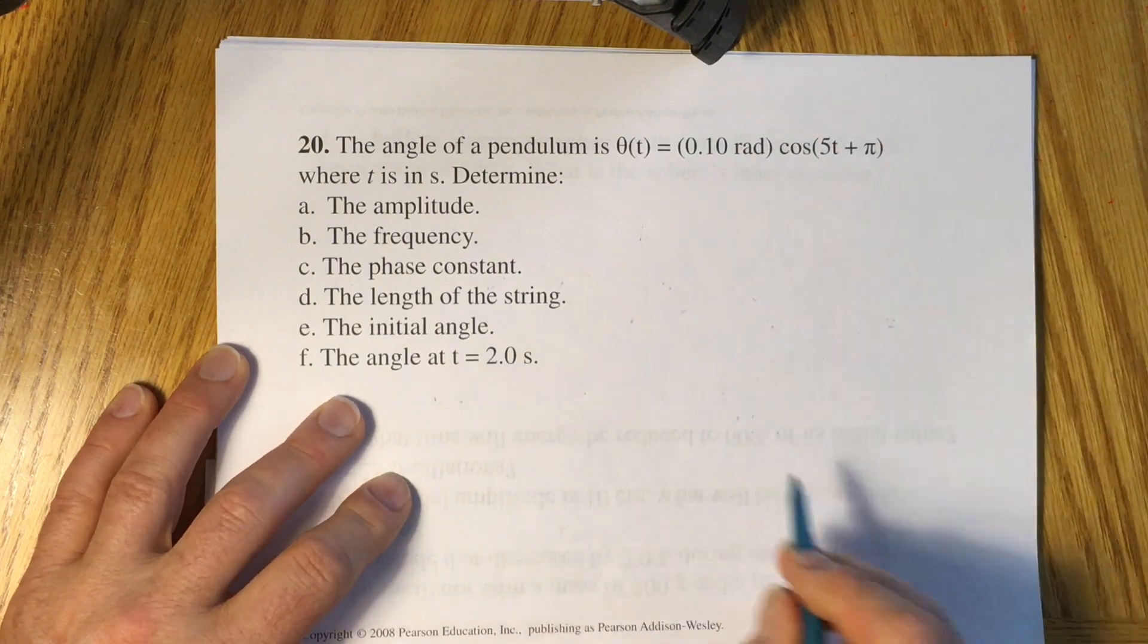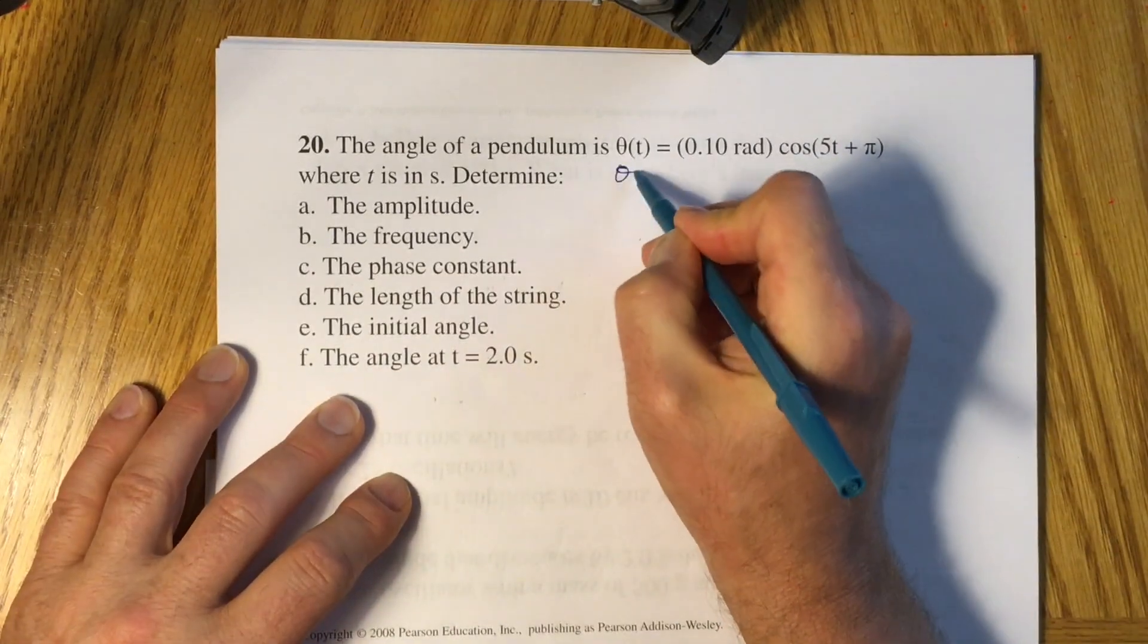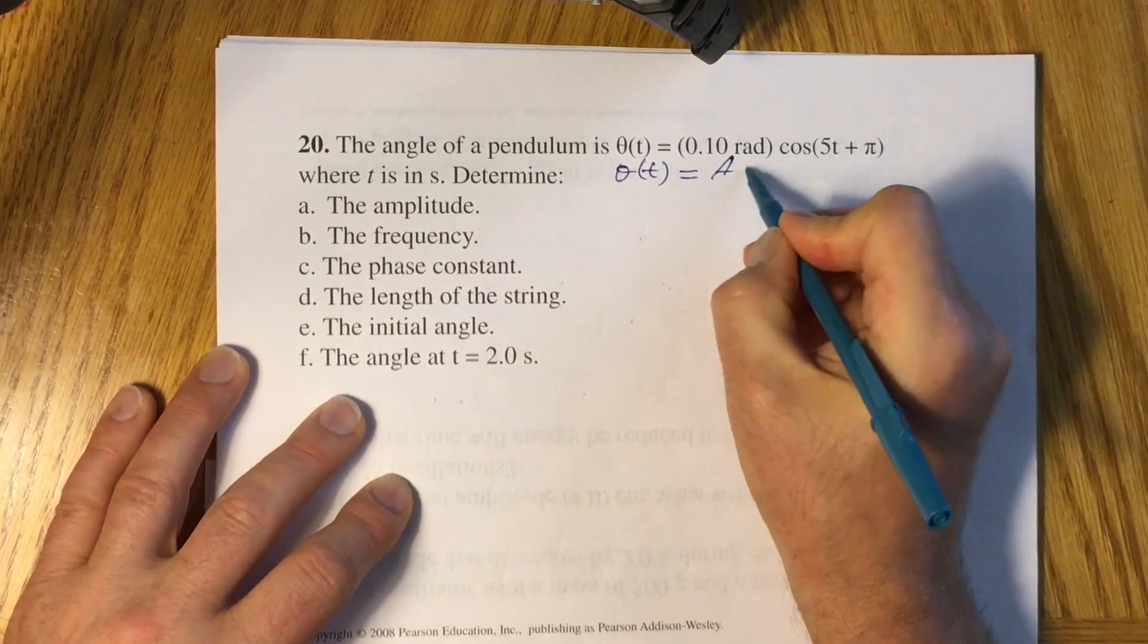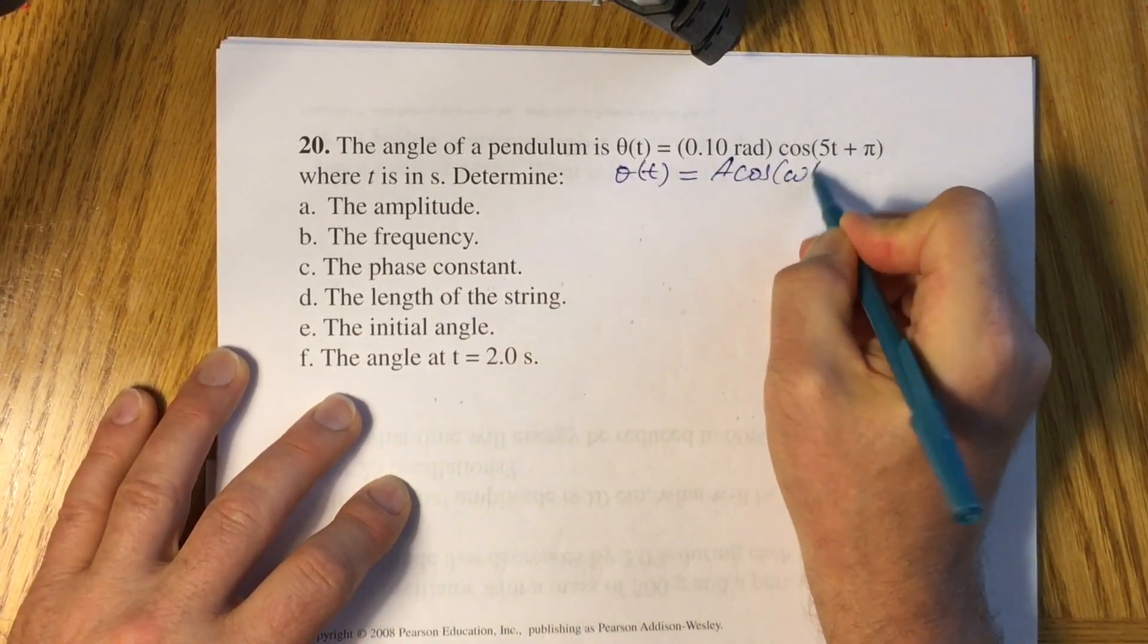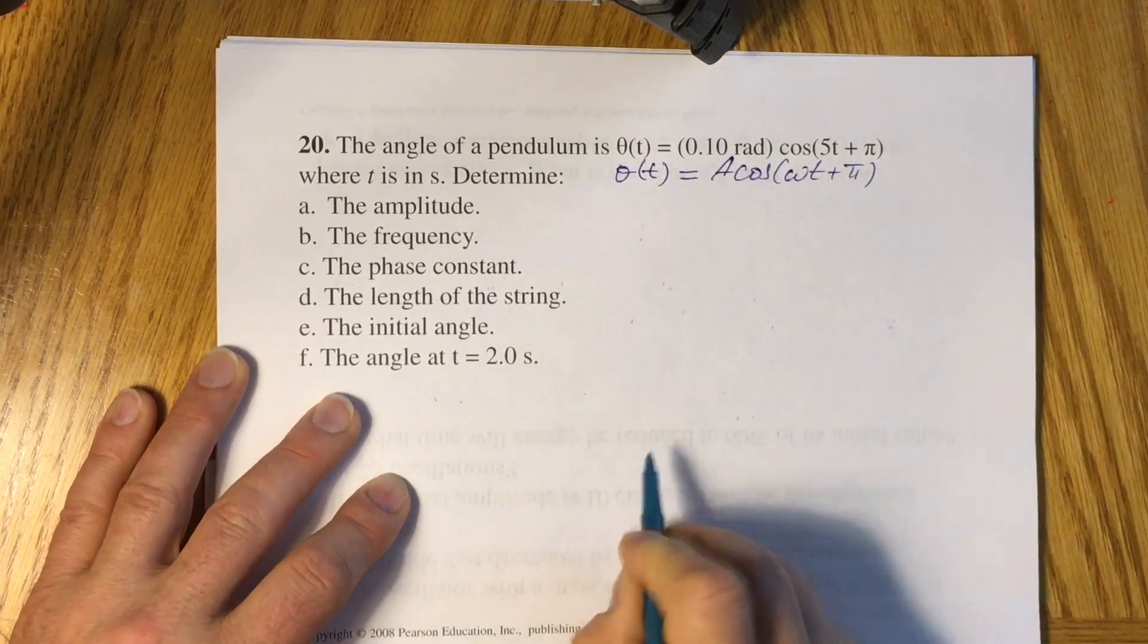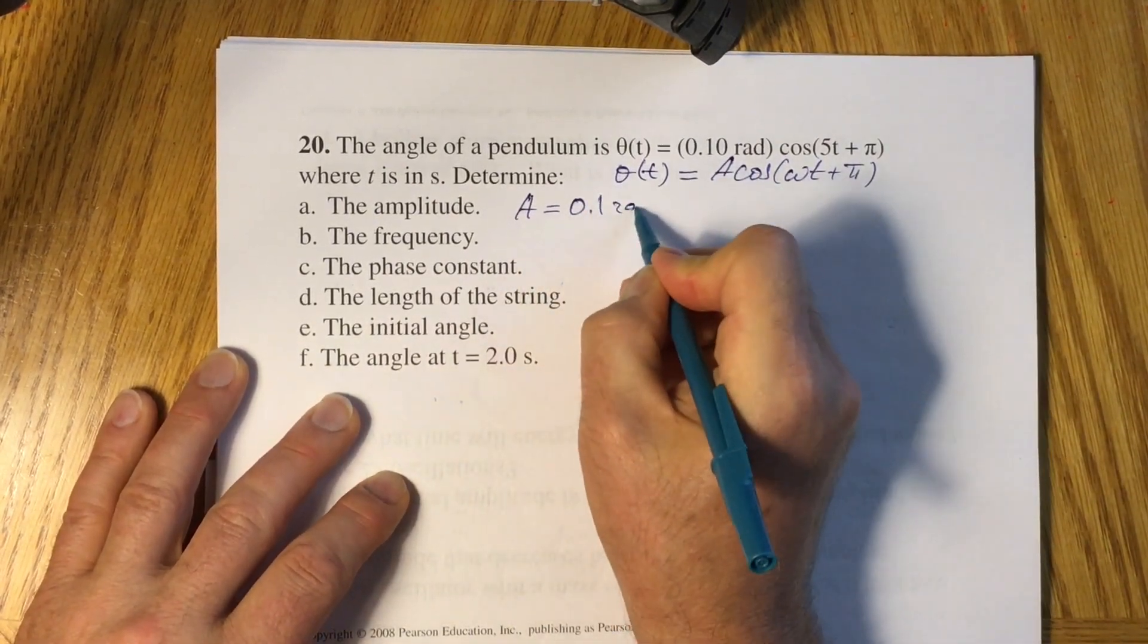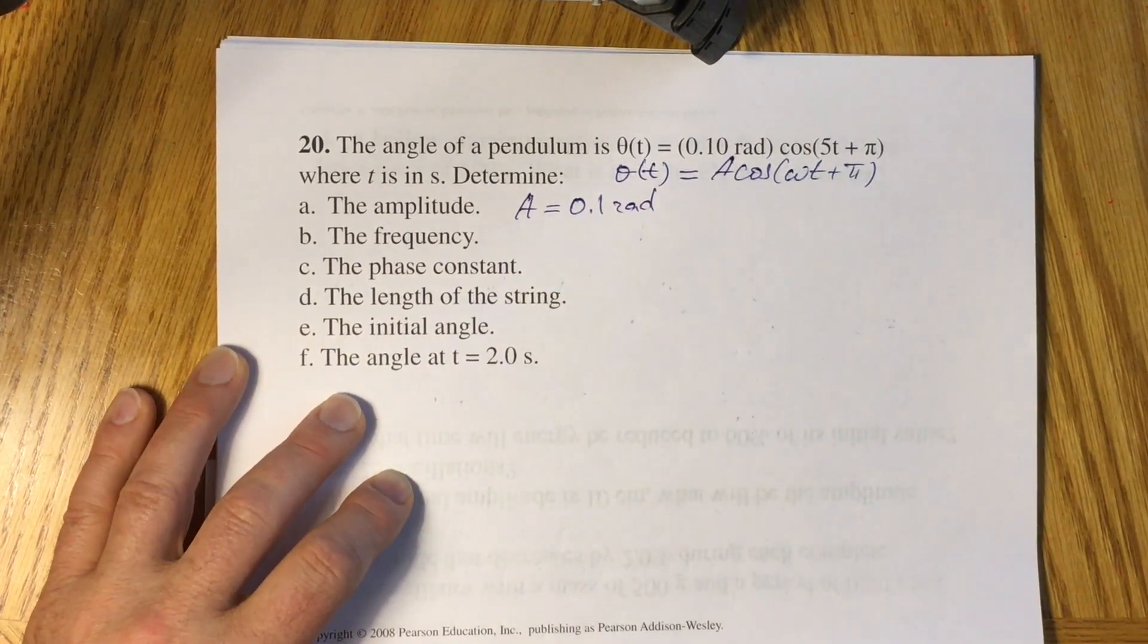From comparison of this equation with the general equation theta of t equals amplitude times cosine omega t plus pi, you will immediately have that your amplitude equals 0.1 radians. You answered the first question.